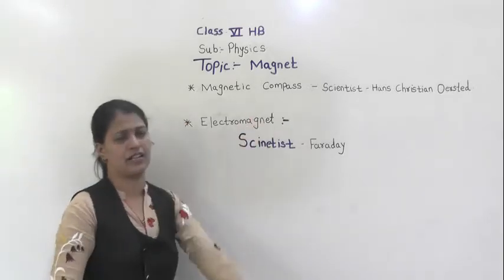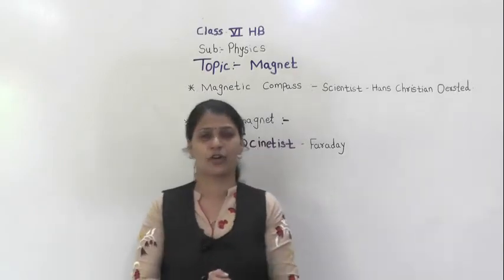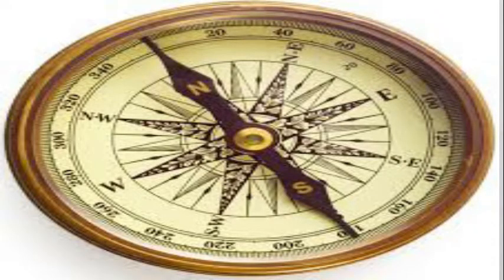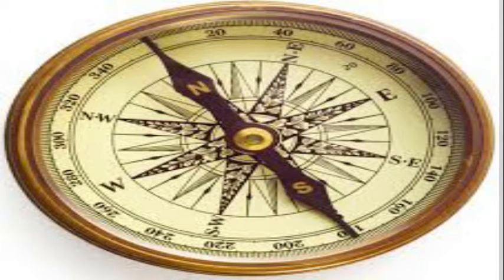The first application is the magnetic compass. You might have seen a magnetic compass. This is the instrument used to find the direction. It consists of a small bar magnet in the form of a needle, which is enclosed in a small box having a glass top. The needle is free to move about its center. The base of the box is marked with directions.